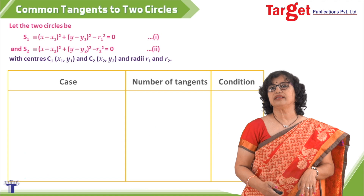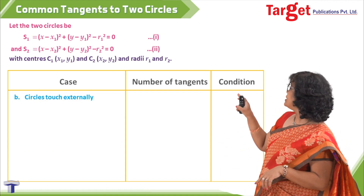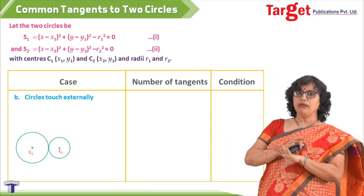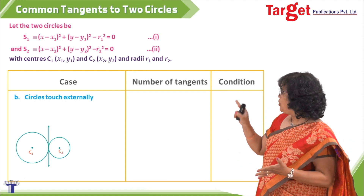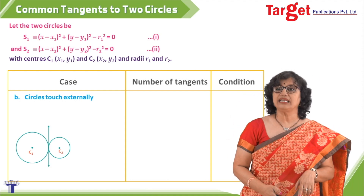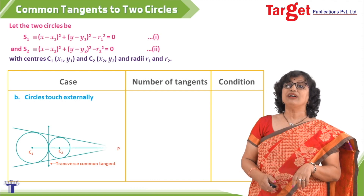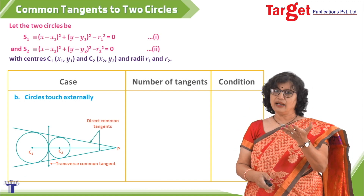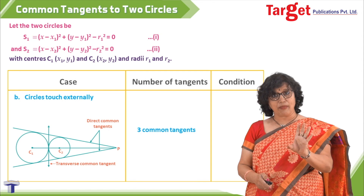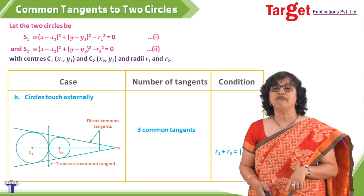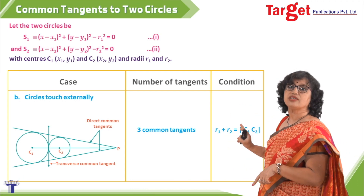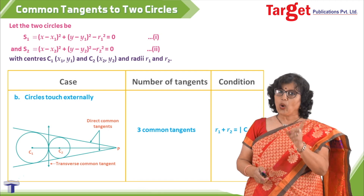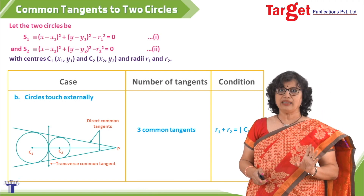The second case is when circles touch externally. The picture shows one tangent common to both circles — that is our transverse common tangent. From an outside point p we can also draw two direct common tangents. So in all we have three common tangents: two direct and one transverse. The condition is r1 plus r2 equal to distance c1c2.